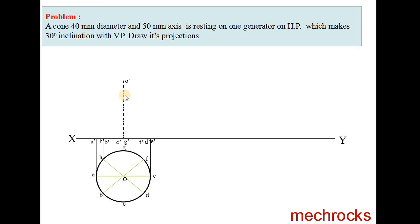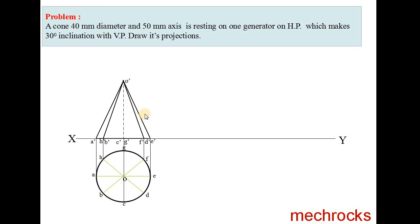Next we join O' to A'. Now join O' to D', O' to E'. Next join A' to E'. Like this, now we have to rotate this generator. This O'E' line is called the generator. Rotate it onto the X'Y' line.